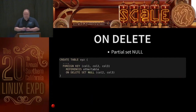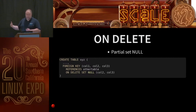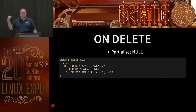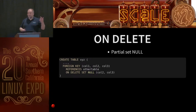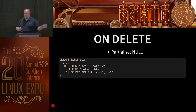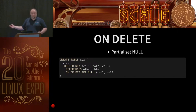Foreign keys can now do a partial SET NULL. Previously with ON DELETE SET NULL, all columns in a composite foreign key would be set to null. Now you can say only set column2 and column3 to null and leave column1 at its original value. This is really useful in multi-tenant systems where you might have a customer_id column you want to retain, so the record doesn't get orphaned from its customer.